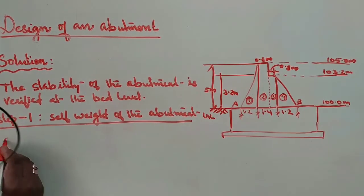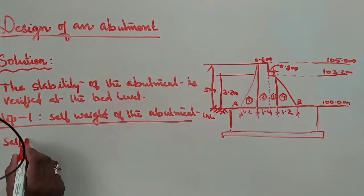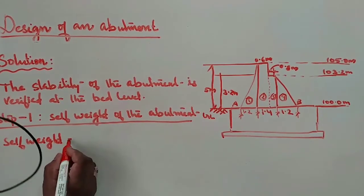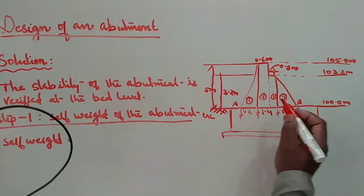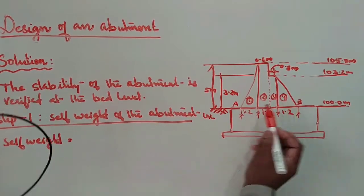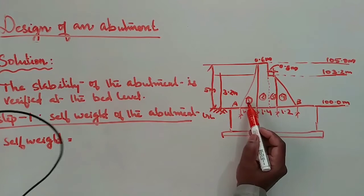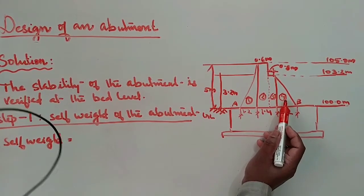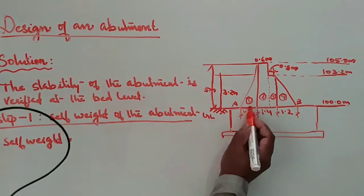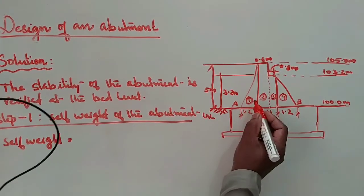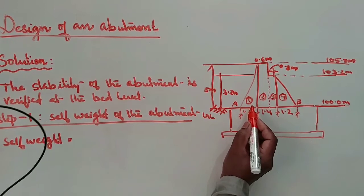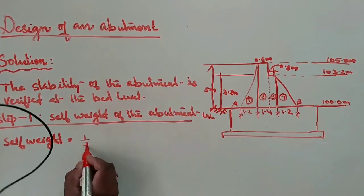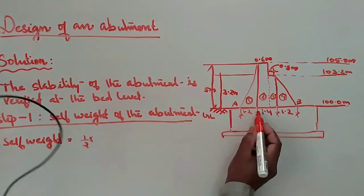Comes to the self weight calculation. Self weight equals: consider this figure. This figure is divided into four sections - triangular and rectangular portions: one, two, three, four.